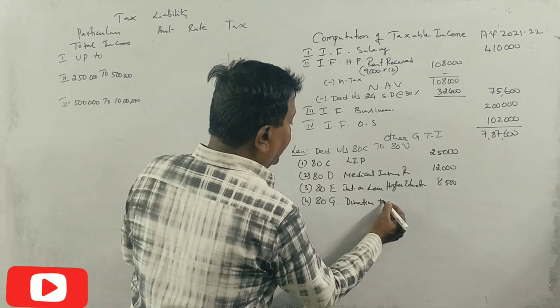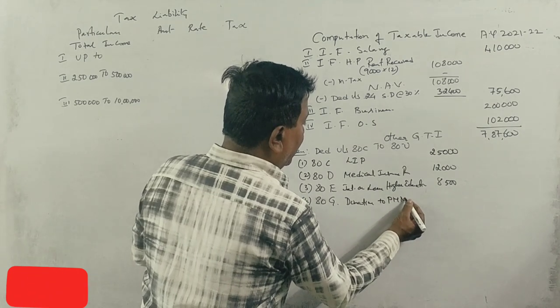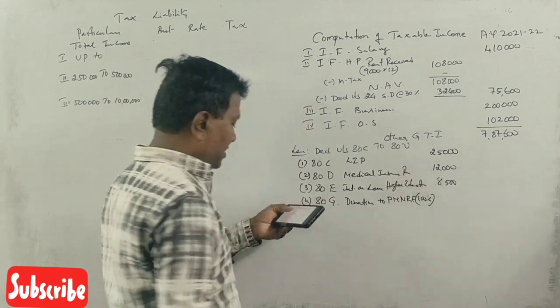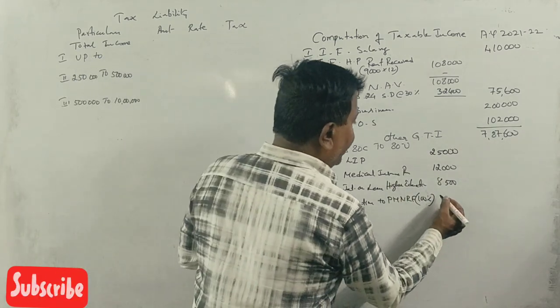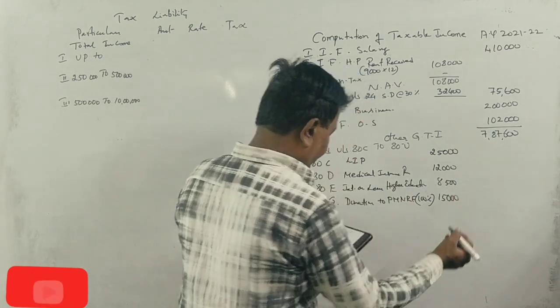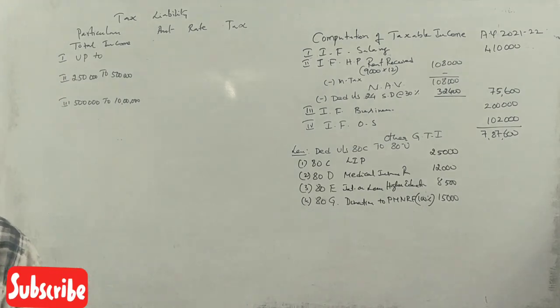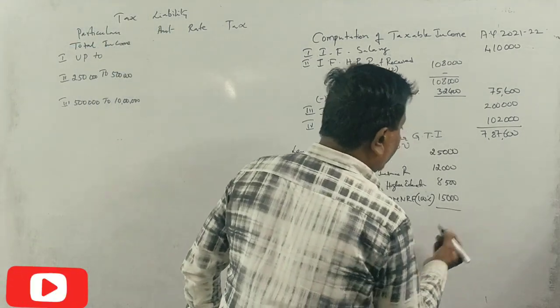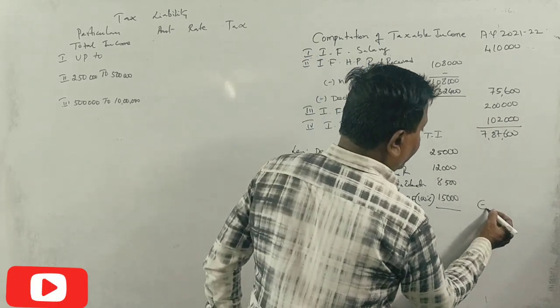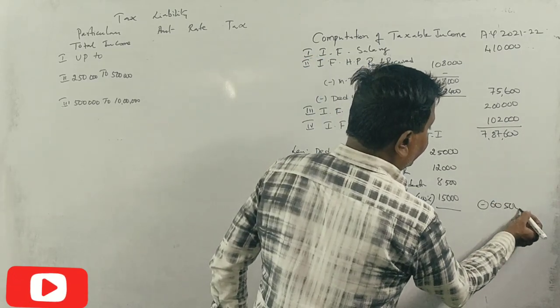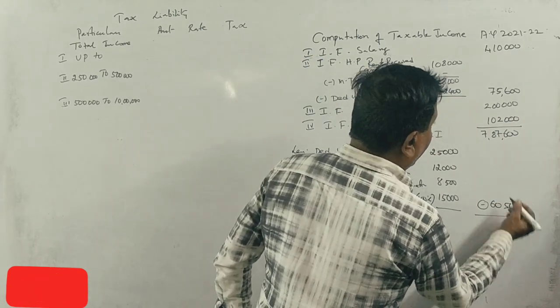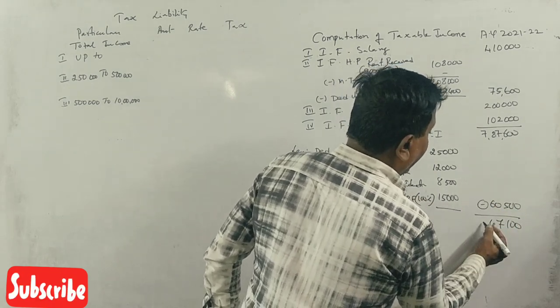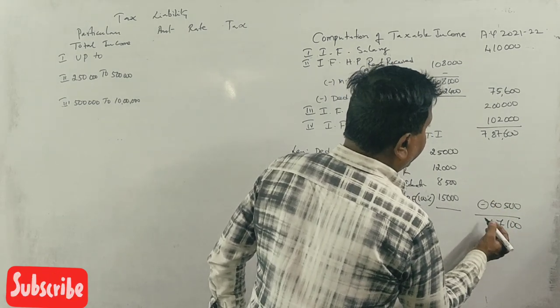Next, donation under Section 80G. Donation to PMRF gets 100 percent deduction, so the entire 15,000 rupees is allowed.